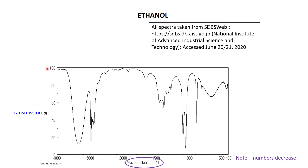As we start here, we see nothing's been absorbed, nothing's been absorbed, lots absorbed there, back up, not as much absorbed, and lots absorbed there. Then up here effectively nothing — nothing, nothing. Some absorbed, back up again, and then quite a lot absorbed, back up again, a bit absorbed, back up again, and so on. If you're interested in absorbance, you almost have to look at it upside down — the lower the peak, the more that has been absorbed. We've definitely got some strong absorbances, some medium ones, and some weak ones.